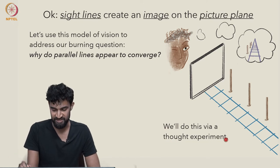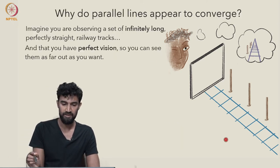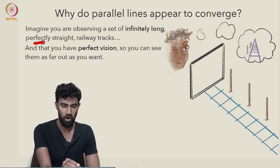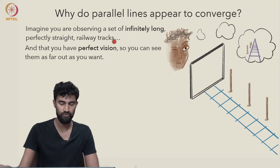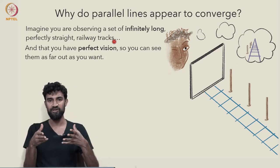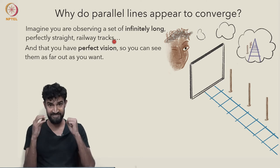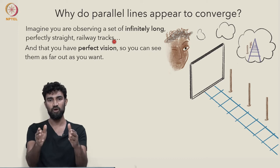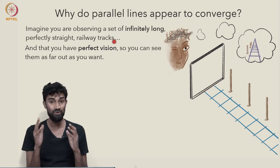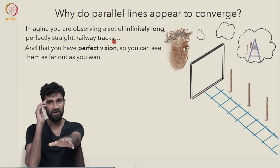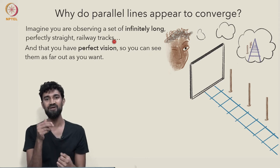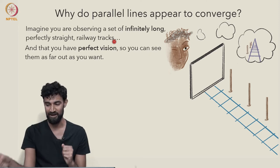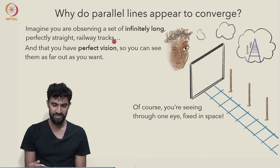And we're going to do this via a thought experiment. So imagine that you're observing a set of infinitely long, perfectly straight railway tracks. So you're standing on railway tracks like you would in real life, except in this thought experiment, the side rails are infinitely long, going on and on forever. But you have perfect vision, so you can view as far down the railway tracks as you want. You can see a point that's a billion miles away, a trillion miles away, as far out as you want.